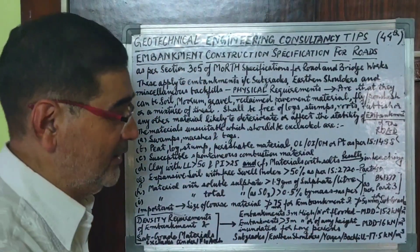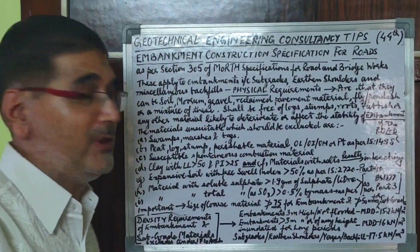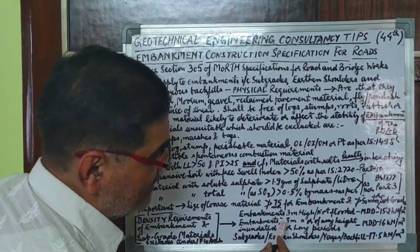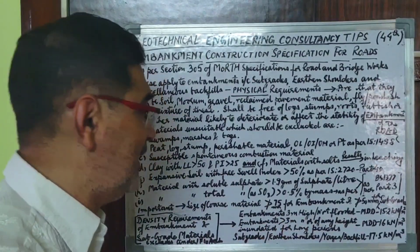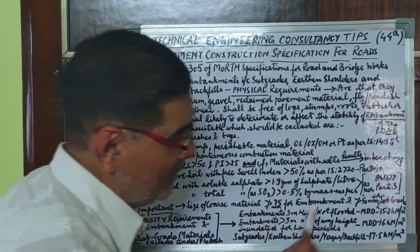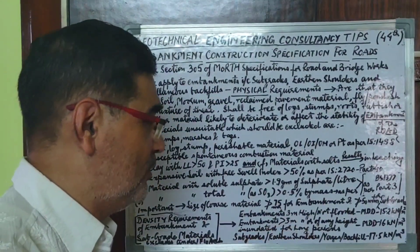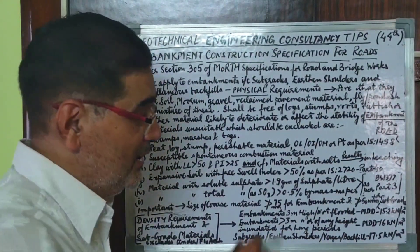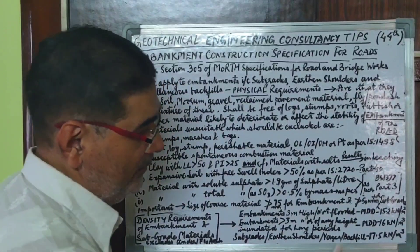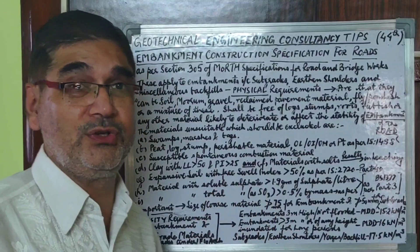For embankments up to 3 meters in height that are not inundated, the minimum maximum dry density required is 15.2 kN/m³. For embankments greater than 3 meters in height, or of any height that are inundated for long periods, the minimum maximum dry density required is 16 kN/m³. For subgrades, earthen shoulders, verges, or any backfill, the minimum maximum dry density required is 17.5 kN/m³. These are tested as per Indian Standard IS 2720 Part 8.